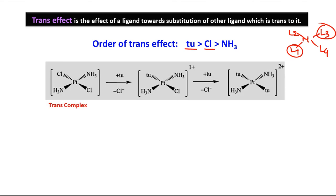For the trans complex, in the starting compound we have Cl and NH3. Among Cl and NH3, Cl has the higher trans effect, so when we treat it with thiourea, it will replace any ligand trans to Cl — that other Cl is trans to it and gets replaced by thiourea. Next, since thiourea has the maximum trans effect, the Cl opposite to it is replaced by a second thiourea. Finally, we get a complex where Pt is associated with two thiourea and two ammonia with 2+ charge balanced by two chloride outside.